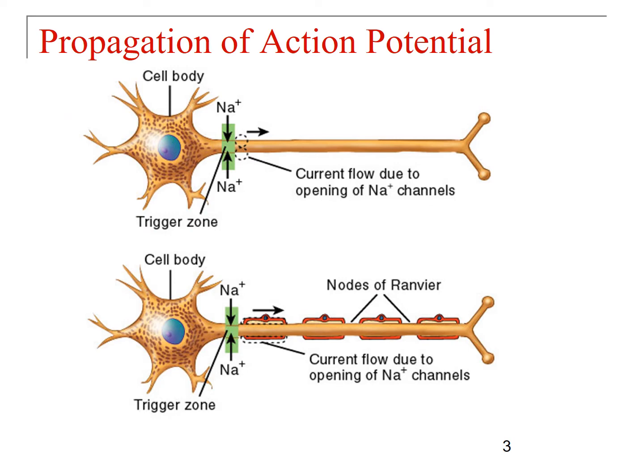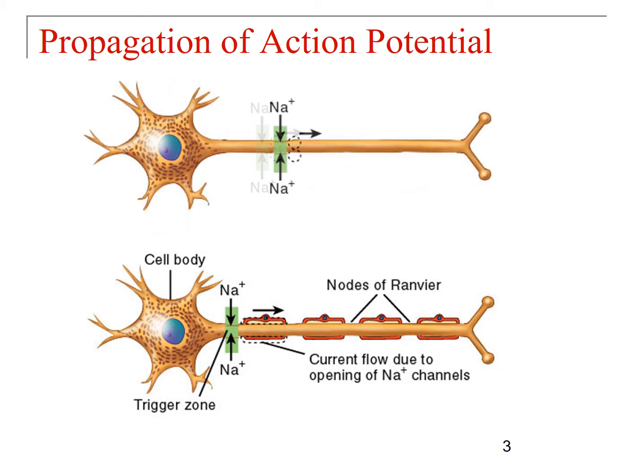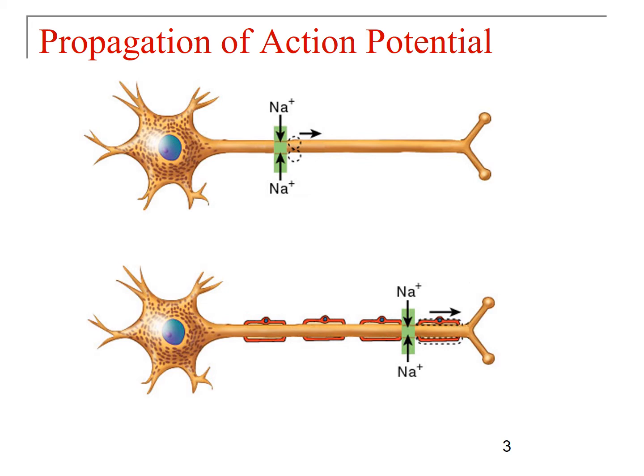Taking those prior diagrams and showing what action potential propagation looks like: at the top, with continuous conduction, you can see the signal moving continuously down the axon at 1, 5, and 10 milliseconds. With saltatory conduction at the same time points, the nerve impulse is already a lot further down the axon. Saltatory conduction happens a lot faster than continuous conduction.